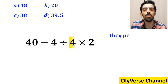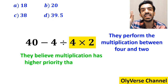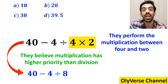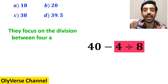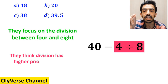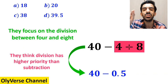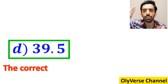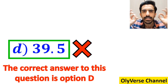Then they perform the multiplication between 4 and 2 because they believe multiplication has higher priority than division. So they rewrite this expression as 14 minus 4 divided by 8. In the final step, they focus on the division between 4 and 8, replacing the expression with 14 minus 0.5, which equals 39.5. They conclude that the correct answer is option D. However, this answer is absolutely wrong.